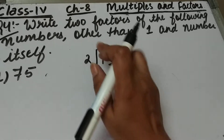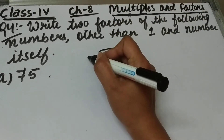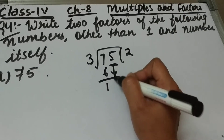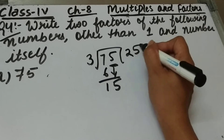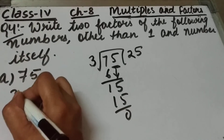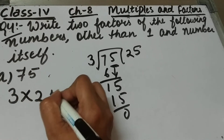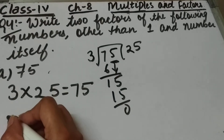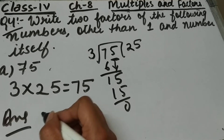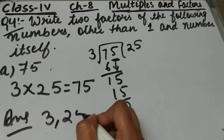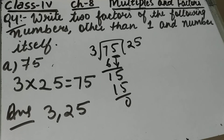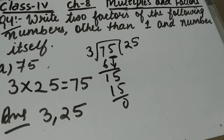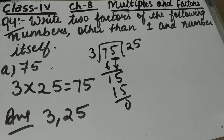Now we will check whether 3 is a factor of 75 or not. 3 twos are 6, bring this 5 down, 3 fives are 15. That means 3 multiplied by 25 is equal to 75. So the 2 factors of 75 are 3 and 25.